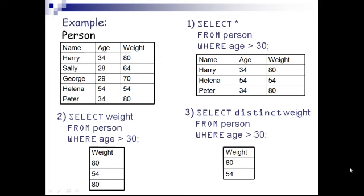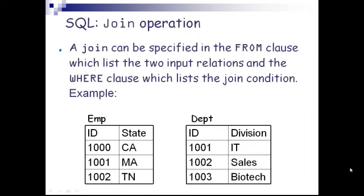Example: a table called 'person' is created with three fields — name, age, and weight. SELECT * FROM person WHERE age > 30 returns three rows. SELECT weight FROM person WHERE age > 30 returns only the weight column. SELECT DISTINCT weight FROM person WHERE age > 30 returns only two distinct values. A join can be specified in the FROM clause listing the two input relations and the WHERE clause listing the join condition.